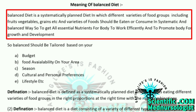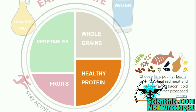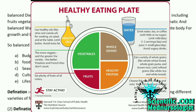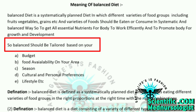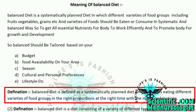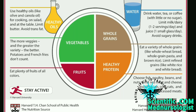Balanced diet is a systematically planned diet where different varieties of food groups — fruits, vegetables, grains, etc. — are consumed or eaten in a balanced way. Balanced diet is defined as a systematically planned diet which includes eating different varieties of food groups in the right proportions, at the right time, with the right combinations. This is the officially published healthy eating plate which guides us for eating healthy balanced meals.